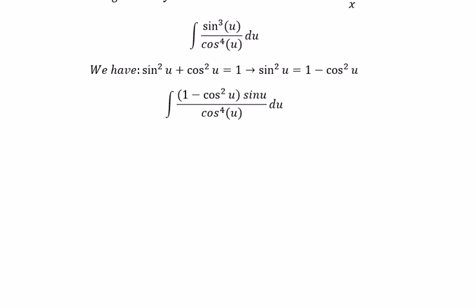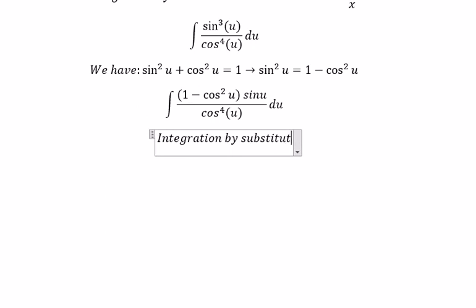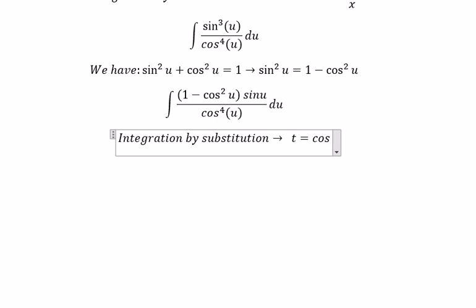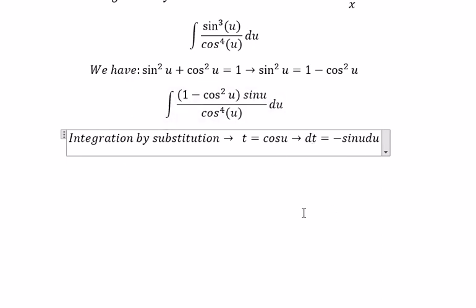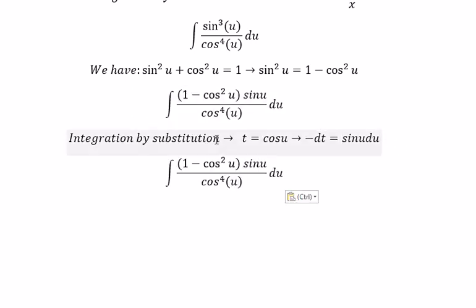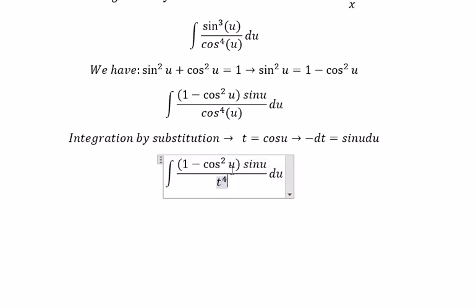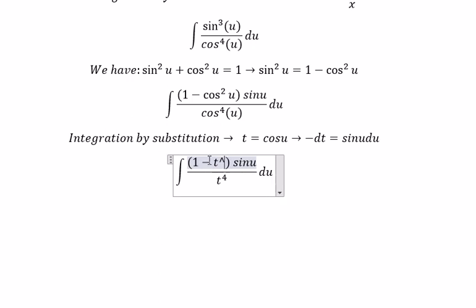Next, we use a second integration by substitution. We let t equal to cosine(u), so dt equals negative sine(u) du. Since we don't have the negative here, we adjust accordingly. We substitute cosine(u) with t and sine(u) du with negative dt.